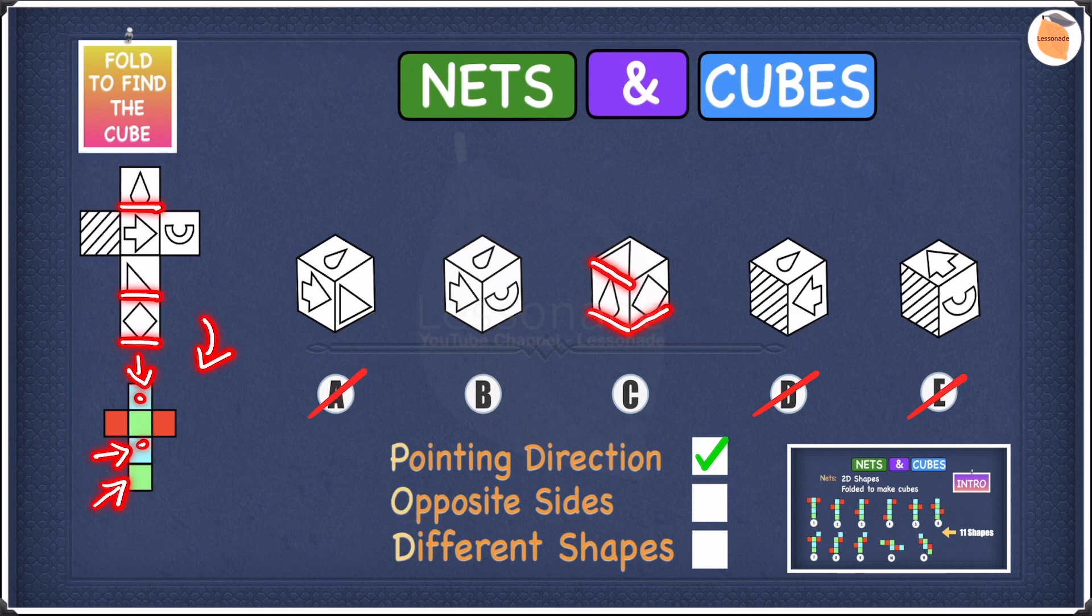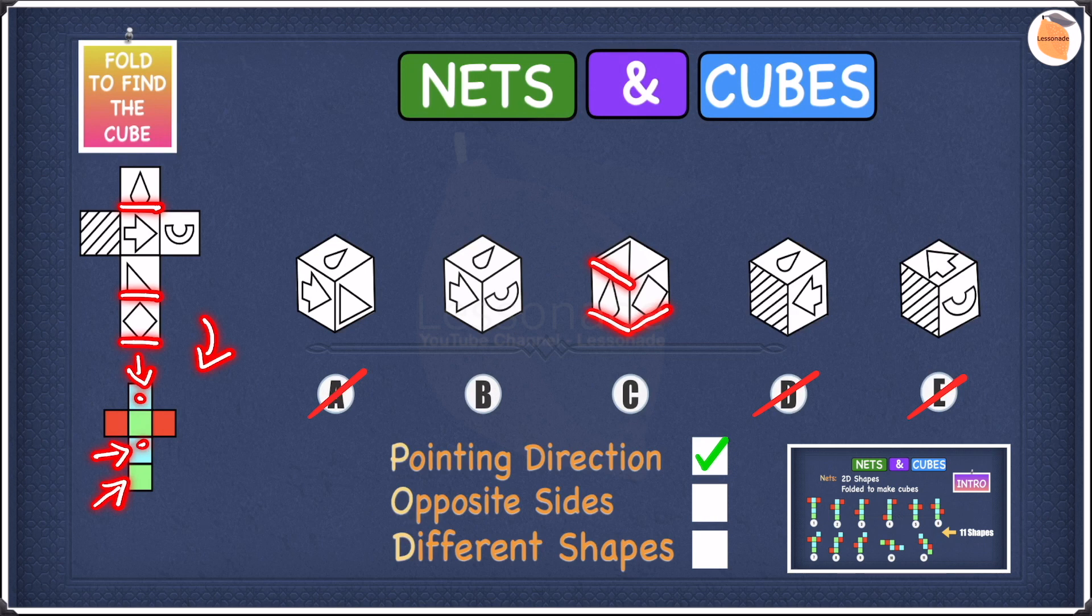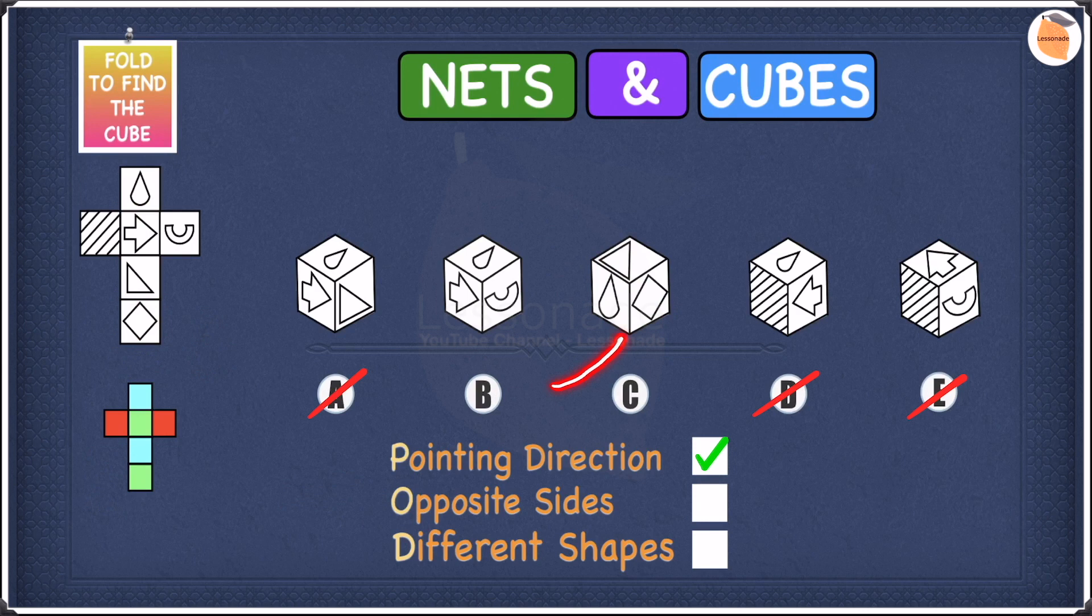As you could see where the raindrop is and where the triangle is, they're both on the same color surface, both on blue surface, which means they're both on opposite sides because same color means opposite sides. According to the opposite sides rule, opposite sides can never be next to each other, but in this cube, this raindrop and this triangle are next to each other even though they're on opposite sides. So therefore we can go ahead and cross off C.